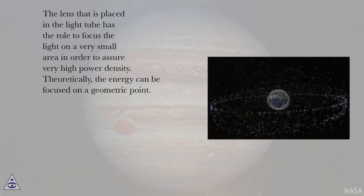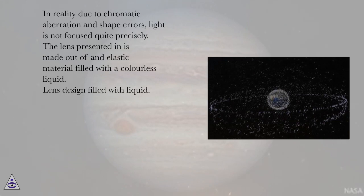The lens that is placed in the light tube has the role to focus the light on a very small area in order to assure very high power density. Theoretically, the energy can be focused on a geometric point. In reality due to chromatic aberration and shape errors, light is not focused quite precisely. The lens presented is made out of an elastic material filled with a colorless liquid. Lens design filled with liquid.